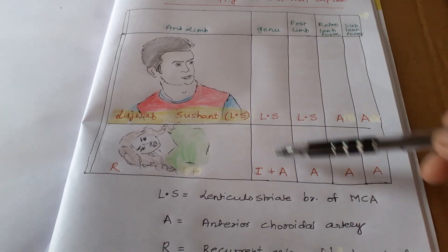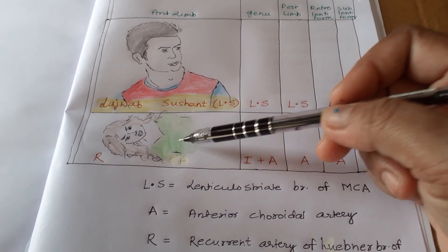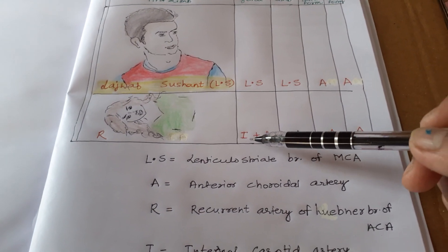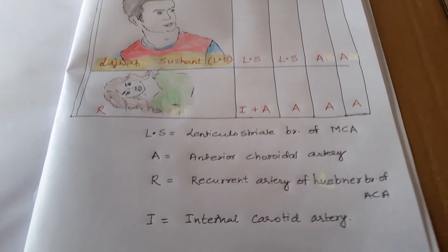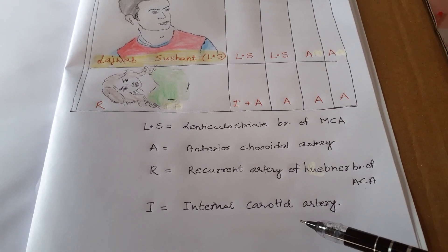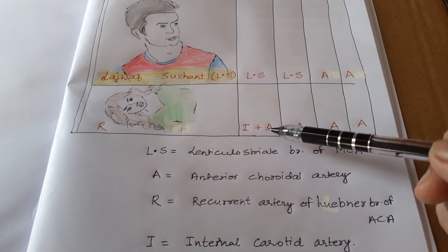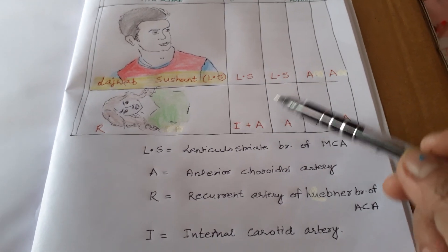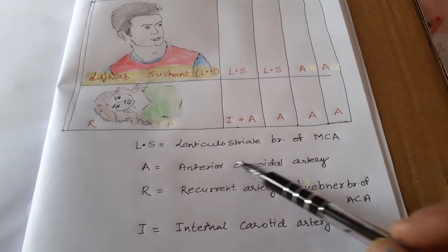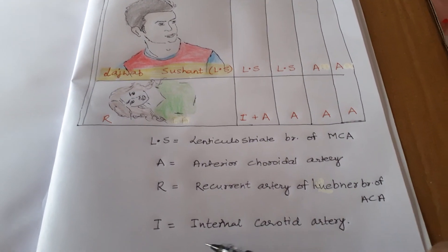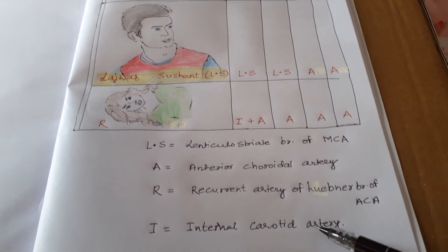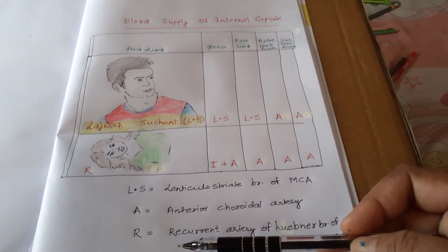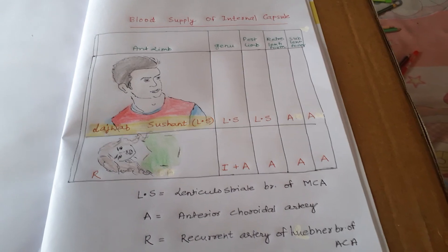Genu — 'I' for internal carotid artery. 'A' for anterior choroidal artery and 'I' for internal carotid artery, along with perforating branches, supply the genu of the internal capsule.